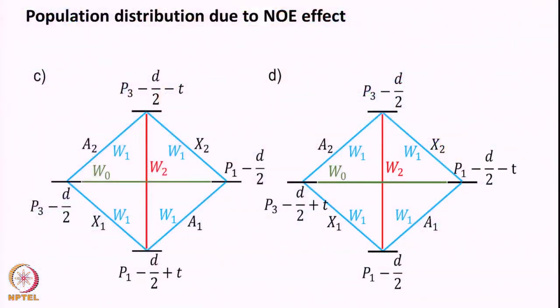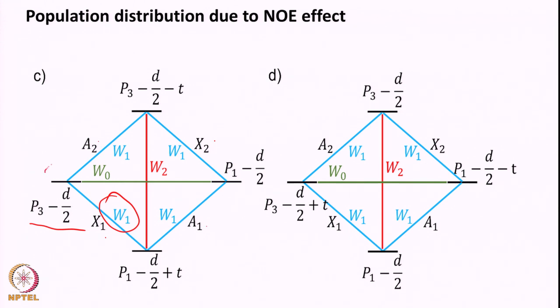Up to this point we had covered earlier, so now let us move ahead. Because of relaxation, population redistributes. For an AX system, X has two transitions X1 and X2, and A has two transitions A1 and A2. The difference in population between states is the signal that comes from A, and similarly for X. We have seen how this population distribution changes because of relaxation.